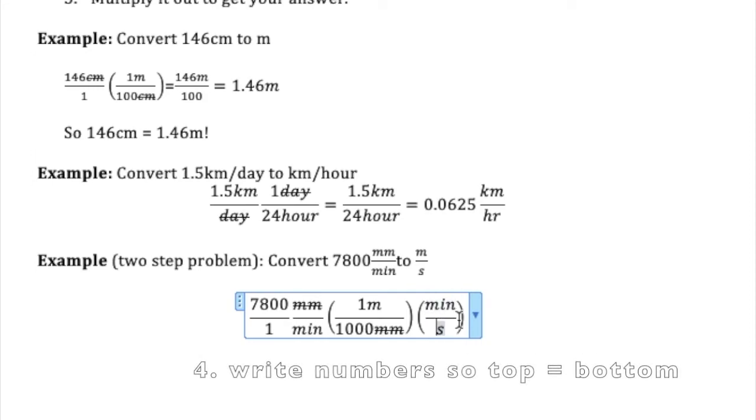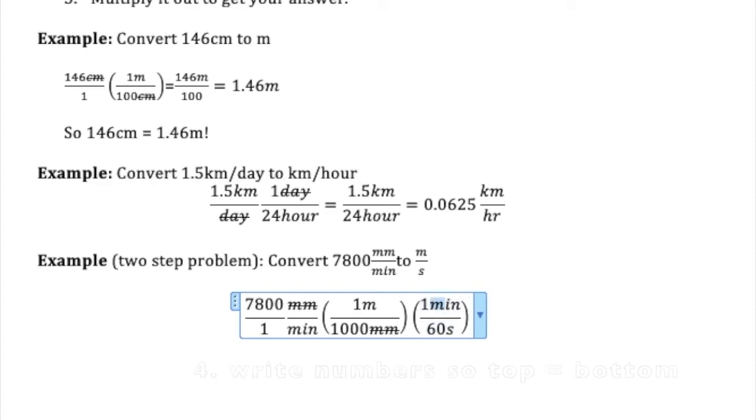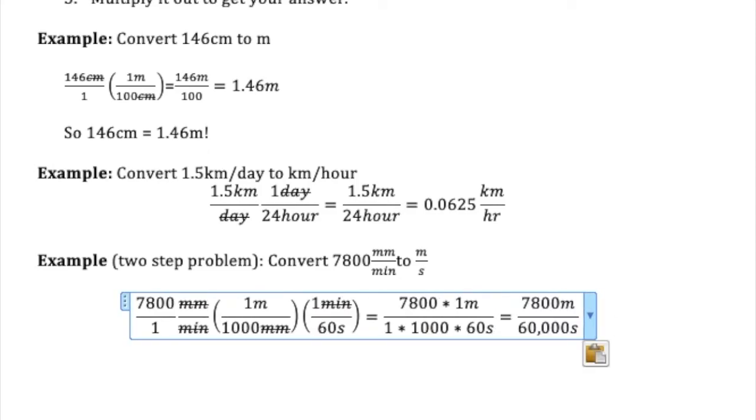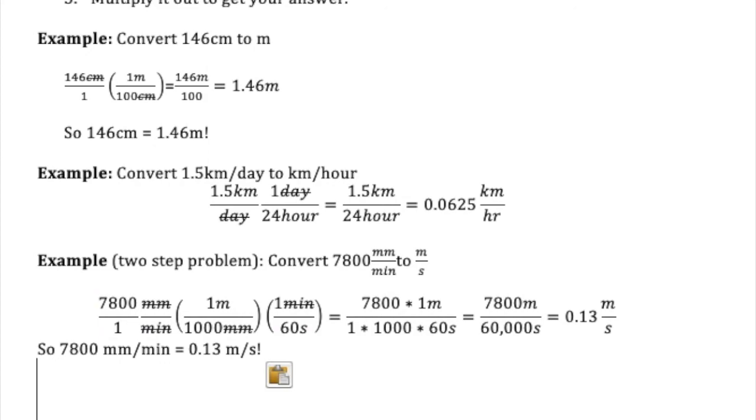And I hope you know that one minute is the same as 60 seconds. So you write it in there, you multiply it out. The millimeters canceled, the minutes canceled, and then you just multiply out the numbers. So on top 7,800 times one times one, and the bottom one times a thousand times 60. So I get 7,800 meters on top and I get 60,000 seconds on bottom. So 0.13 meters per second. So we've learned that 7,800 millimeters per minute is the same as 0.13 meters per second.